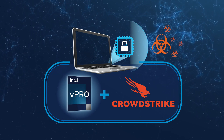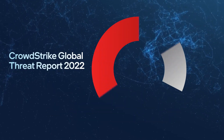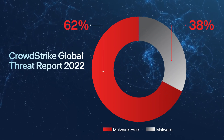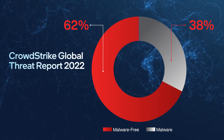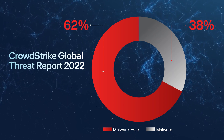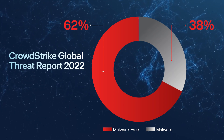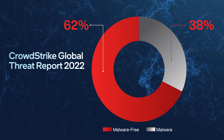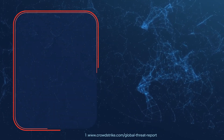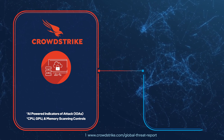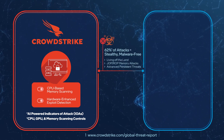CrowdStrike's Global Threat Report outlined a marked increase in malware-free attacks. These file-less attacks attempt to gain access and persistence where traditional EDR techniques are difficult to employ, by abusing valid system processes or by deploying straight into runtime memory. CrowdStrike's Indicators of Attack, or IOA, approach can identify attacks before they gain a foothold.